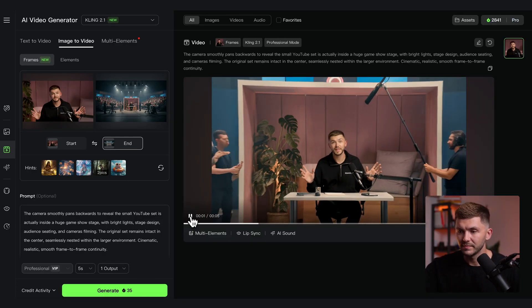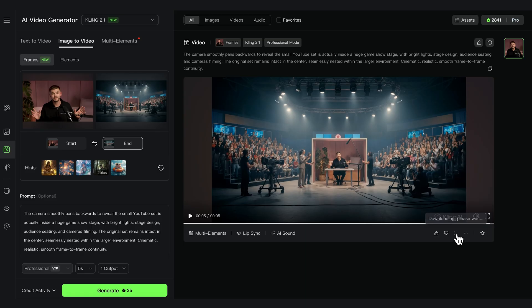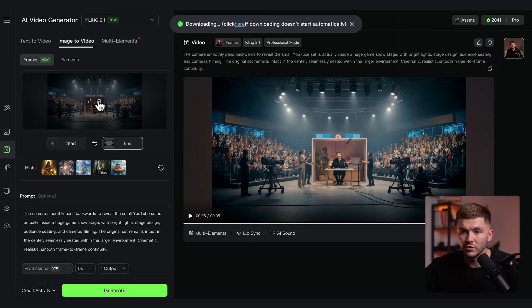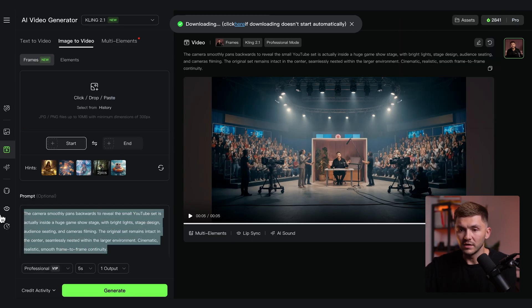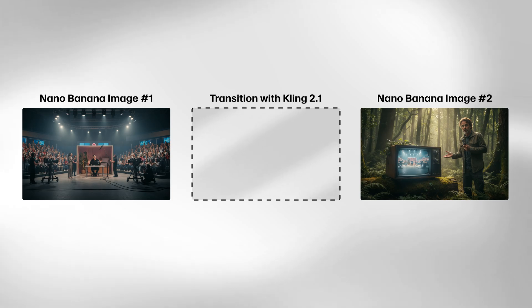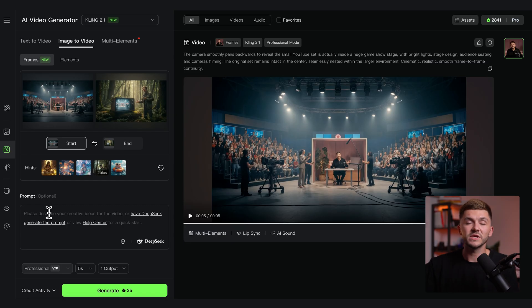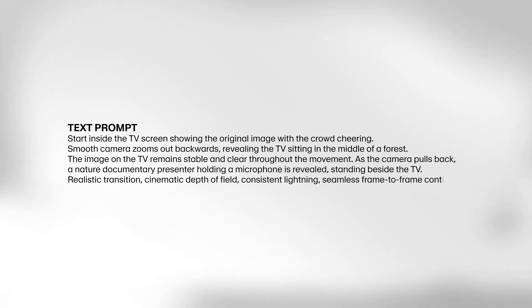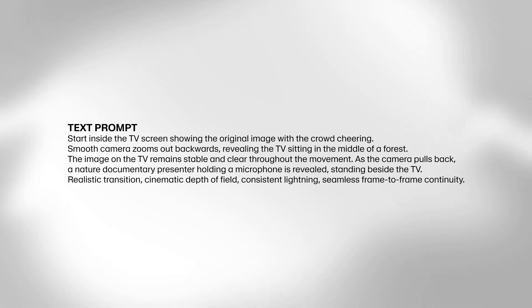This is the result, which looks pretty good, so I'm going to download it without a watermark and now generate the next scene. I remove the start and end frame, delete the prompt, and this time the start frame is the first image created in Nanobanana, while the end frame is the second image — the TV set in the forest. For the prompt I describe the camera still panning backwards to reveal it's actually a game show on the TV within a random scene in the middle of the forest.